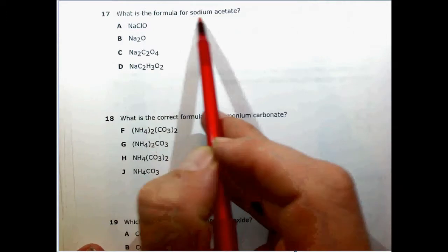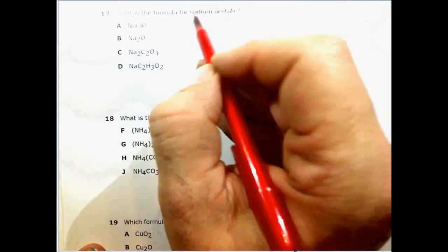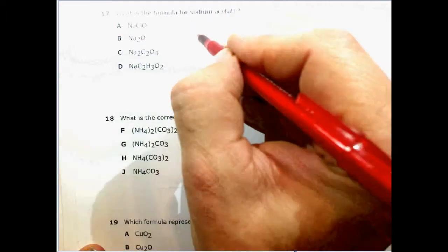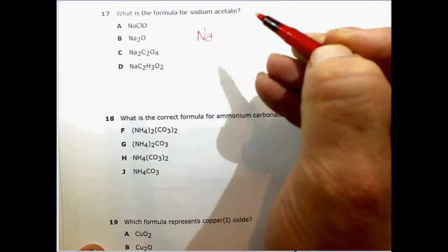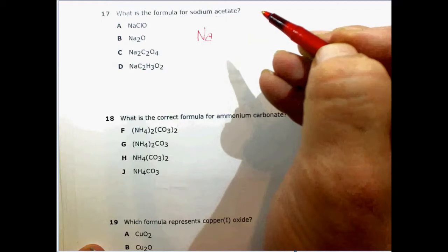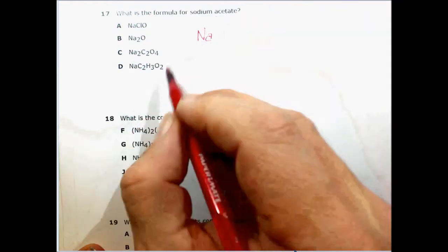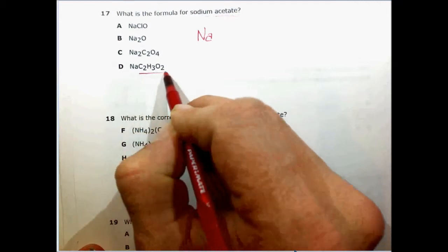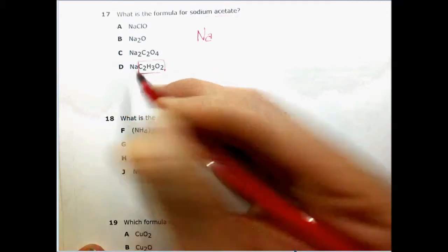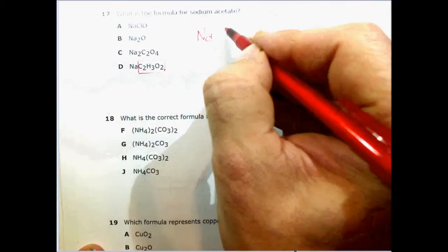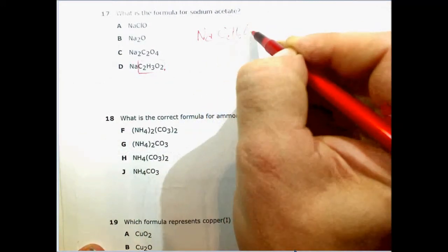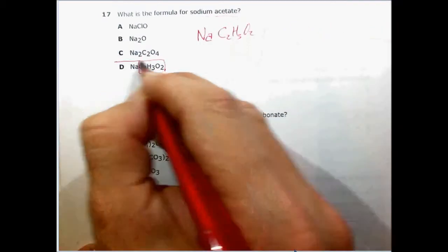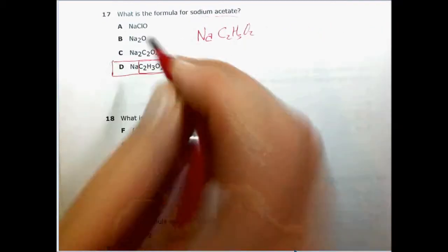What is the correct formula for sodium acetate? Okay, sodium is a metal, acetate is a polyatomic ion. The first thing that we need to do is write sodium, Na. Then we need to look up acetate on our periodic table. If we look up acetate on the back of our periodic table in the polyatomic ion section, we'll see that it's C2H3O2. This must be it. It's the only one that fits.